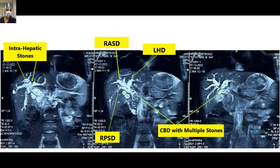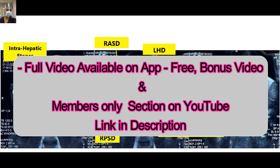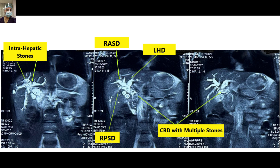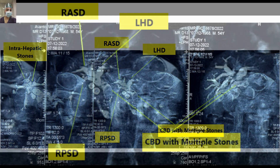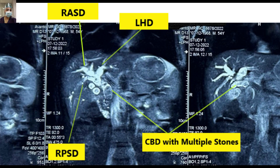In the first image you can appreciate multiple signal voids in the first-order biliary radicles — the right hepatic duct, right anterior sectoral duct, and right posterior sectoral duct. In the middle image we have tried to demonstrate the anatomy: this is a Type 3B biliary anatomy. The horizontal duct is always the right posterior sectoral duct (RPSD) and the left duct is again horizontal, while the vertical duct is always the right anterior sectoral duct. All are dilated and jam-packed with stones up to the first-level biliary radicles, showing an extensive stone burden.